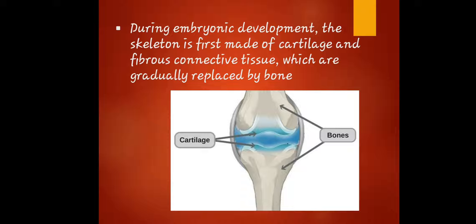Always remember that it will begin in the embryonic skeleton with cartilage and fibrous connective tissue that serve as the reason why the bone can be replaced gradually. As you can see in the illustration, there are the bones and the cartilage itself.